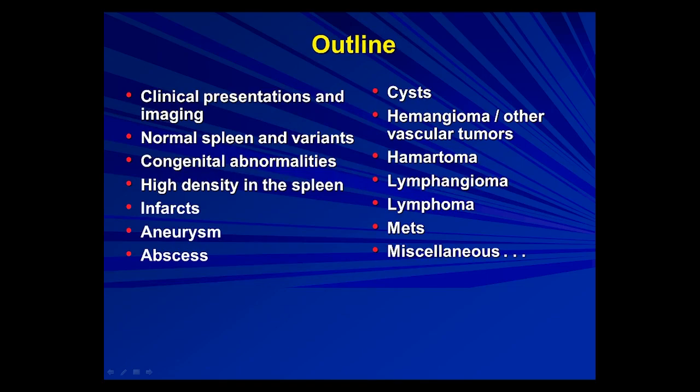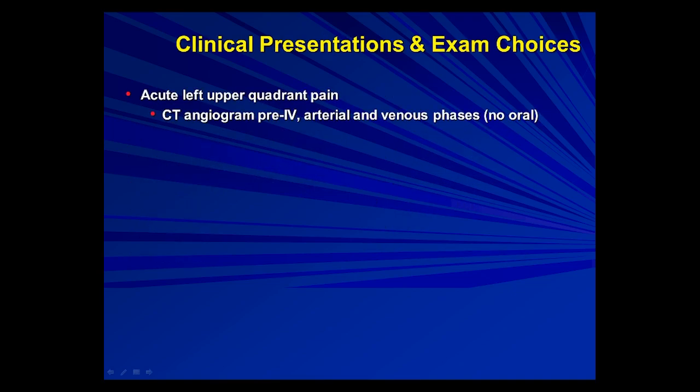This is the outline of some of the entities I will cover, leaving out trauma. If somebody presents with acute left upper quadrant pain, worried about vascular entities, rupture, and things like that, you should have a full CT angiogram with pre-arterial and venous phases. You don't need to bother to give oral contrast — time is of the essence.